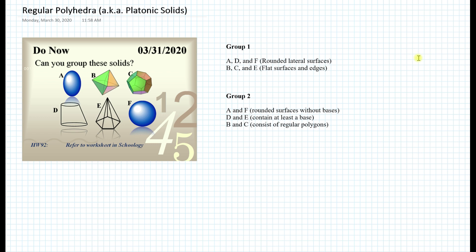So as a matter of fact, in today's lesson, this is something I would like to look at — figures B and C, the ones that consist of regular polygons. It turns out that these have special names and have a special meaning in Euclidean geometry. So let's look into more detail.